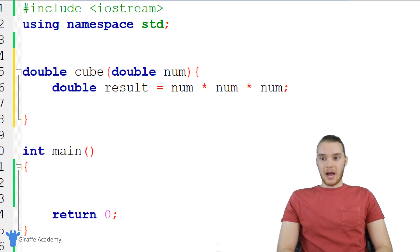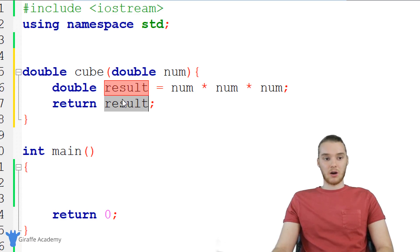Down here, I want to return the value that's stored inside of result. So I can just say return result. And now this is going to tell C++ that we want to return this value stored inside result back to the caller.